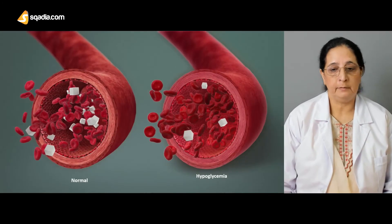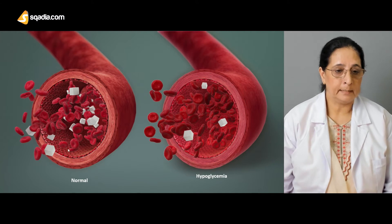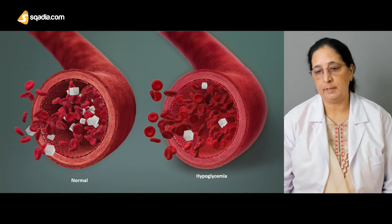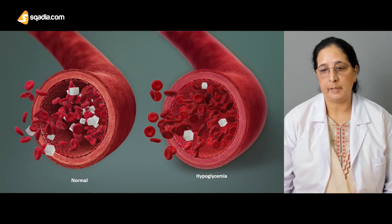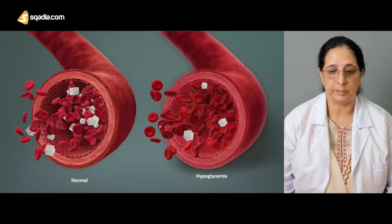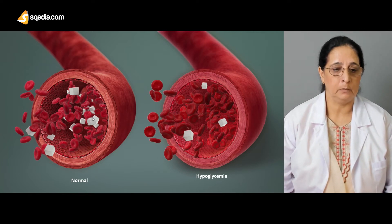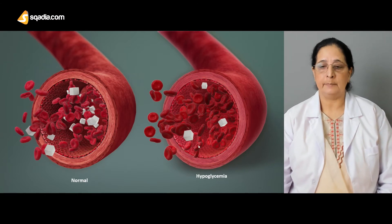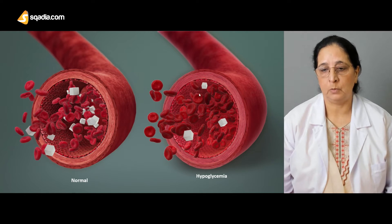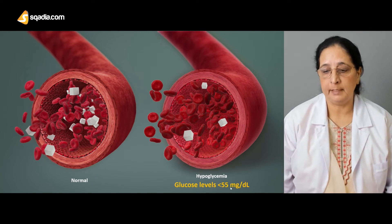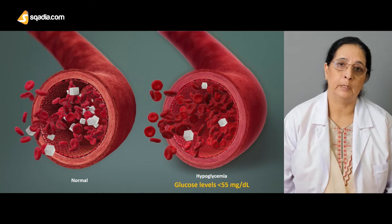The first thing we will see here is a picture showing the glucose level in the blood. In a normal individual you can see the blood glucose level, and when there is hypoglycemia it's low glucose in the bloodstream. This is a picture of a blood vessel showing the bloodstream — you can see a lot of glucose present here. These cubes represent glucose, and in hypoglycemia there is a decreased level of glucose in the blood.